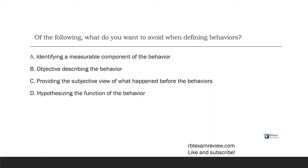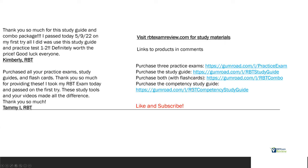You just want the facts. Objectivity is the name of the game when you're defining behaviors. C, providing the subjective view of what happened before the behaviors. Do we just want to go off of our opinion or how we felt? No. We need to go off what we saw, exactly what we saw. Don't editorialize. Don't change it up. Just give the most objective view possible. And then D, hypothesizing the function of the behavior. Well, of course you want to hypothesize the function of the behavior. That's the most important thing to figure out. What is the function? Why is it occurring? So, of the following, what do you want to avoid? C, providing the subjective view of what happened before the behaviors.